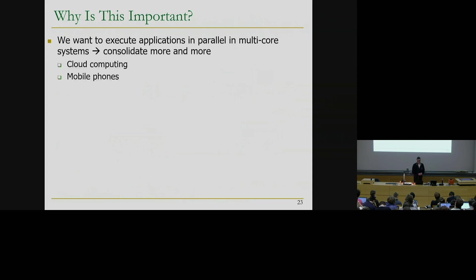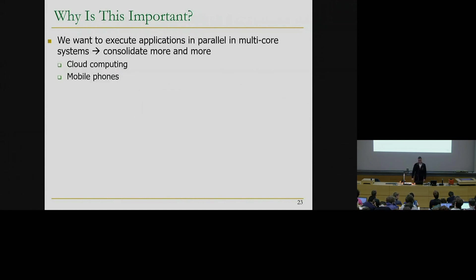So why is there a slowdown to begin with? It's now clear that this is because of interference at the main memory level. But what really causes this disparity and why do they interfere with memory in this way? Why is this an important problem?